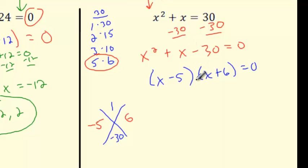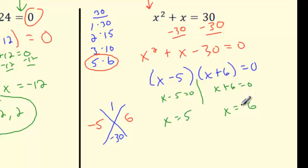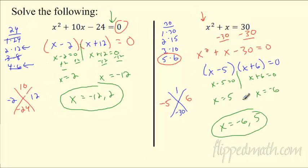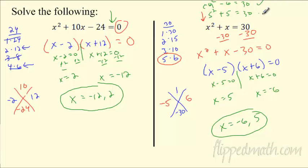Let's finish this out. When does x minus 5 = 0? When does x plus 6 = 0? So x = 5 and x = −6. Plug in to verify: 5² + 5 = 25 + 5 = 30 ✓. And negative 6 squared plus negative 6: 36 − 6 = 30 ✓. Take a second and get 100% — totally worth it.